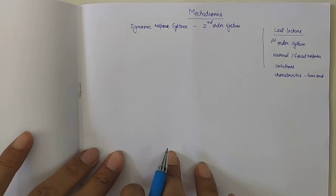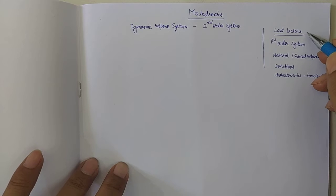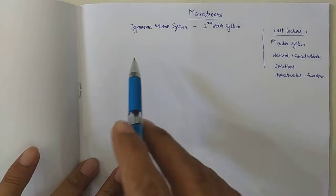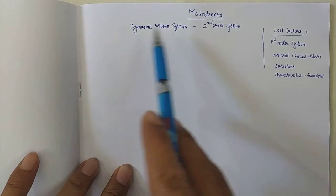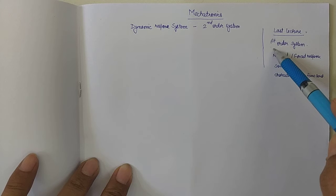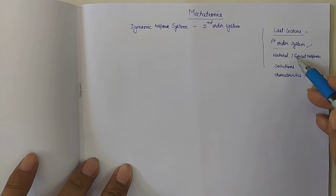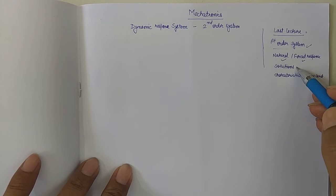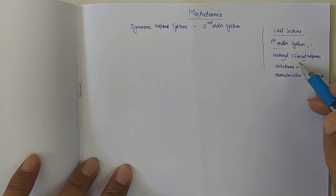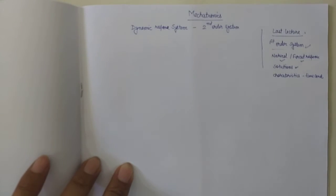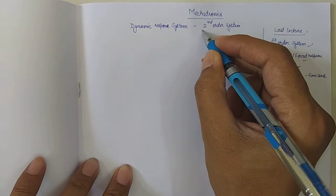Good morning. In the last lecture we talked about first-order systems in the framework of dynamic response. We saw the dynamic response of the first-order system, covering natural and forced responses, how the solutions are sought in that framework, and the system characteristic in the form of time constant. In this lecture we are going to talk about the second-order system.